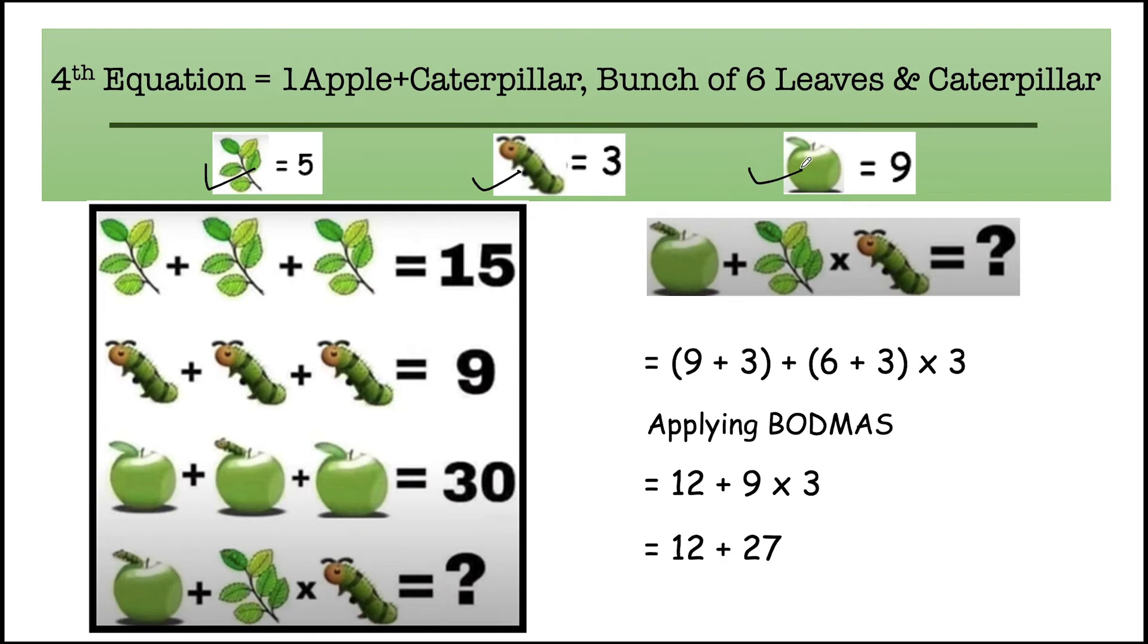So we have all the values present here: five leaves, one leaf will be one, one caterpillar equals three, and one apple equals nine. Now solving the final equation, we have to carefully see every image because there are minute details present for every image. For example, here on this apple there is one caterpillar present.